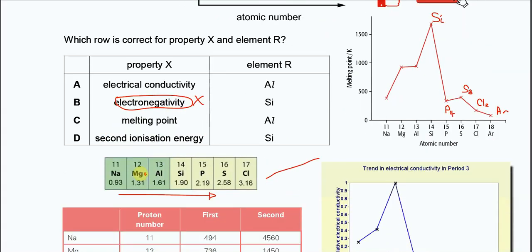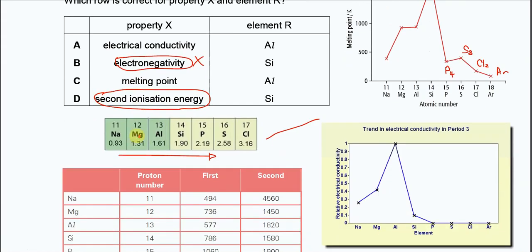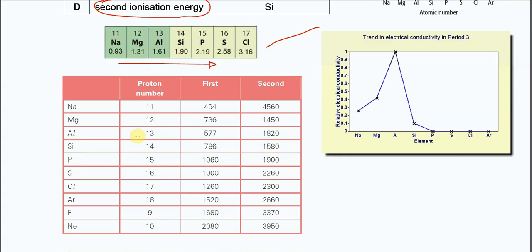For second ionization energy, if property X is second ionization energy, let's look at this table. When across the period from sodium to argon, as you can see, the highest second ionization energy is sodium. Why? Because sodium is Group 1, when it removes the second electron, the second electron is from the inner shell, so it needs more energy to remove it. That's why the second IE for sodium is the highest.